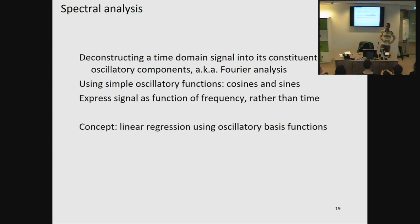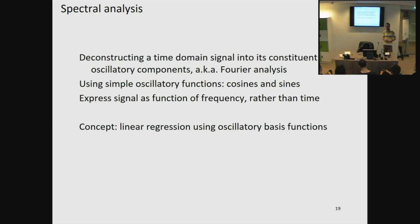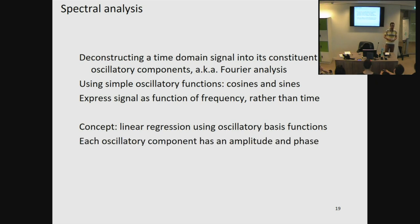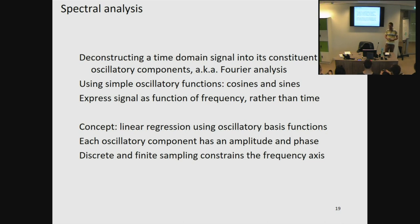To recap: in spectral analysis, we deconstruct the time domain signal into its oscillatory components. This is called Fourier analysis, and we use cosines and sines to do this, expressing our signal in terms of frequency instead of time — which are mathematically the same. Spectral analysis is similar to linear regression using oscillatory basis functions. Each oscillatory component has an amplitude and a phase. Our frequency analysis is limited because discrete and finite sampling constrain our frequency axis.